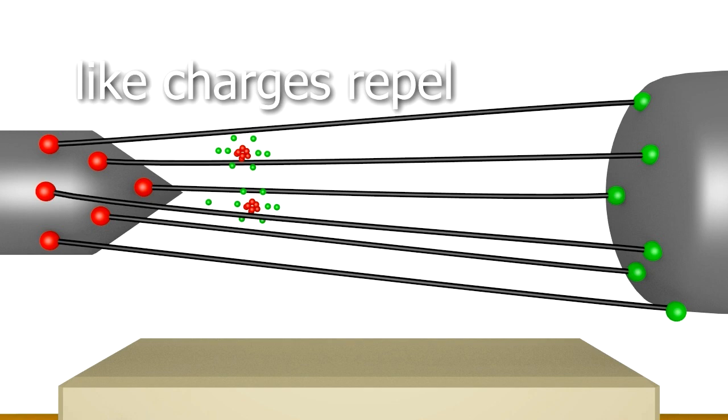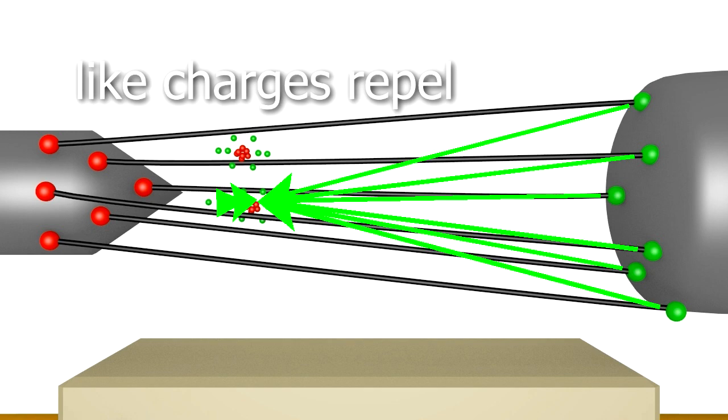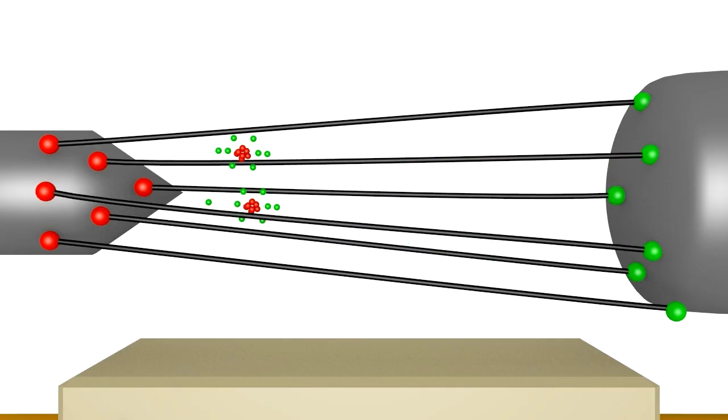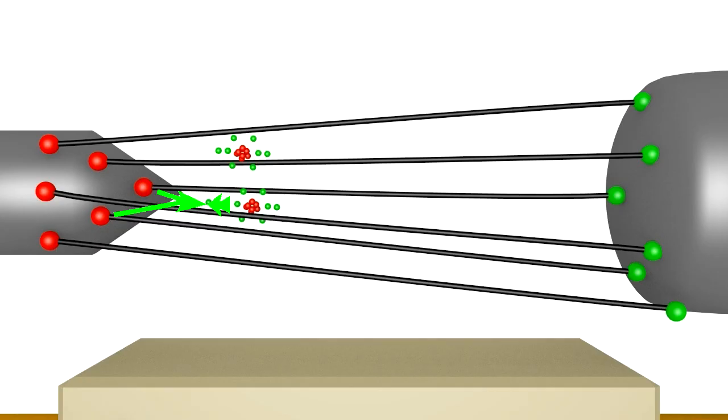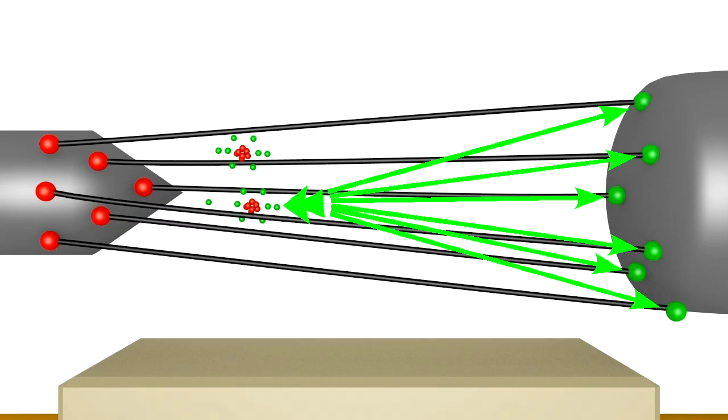Meanwhile, like charges repel each other, so the negative electron is repelled from the negatively charged object. That leaves the atom with more positive protons than negative electrons, so it's positively charged. An atom with an unbalanced charge like this is called an ion. It's repelled from the positively charged object and attracted toward the negatively charged one.